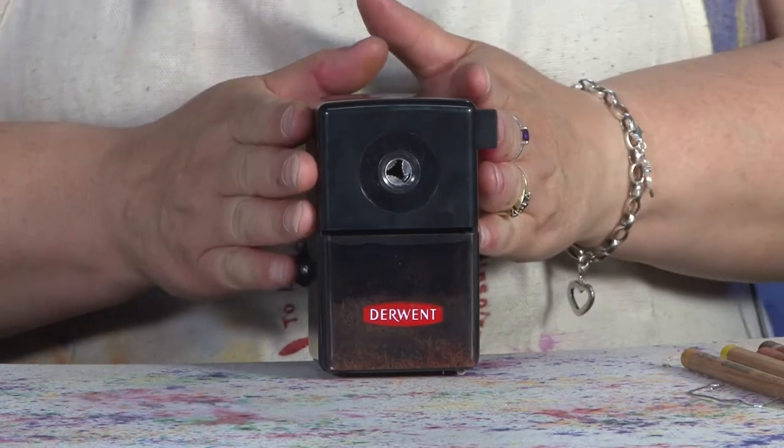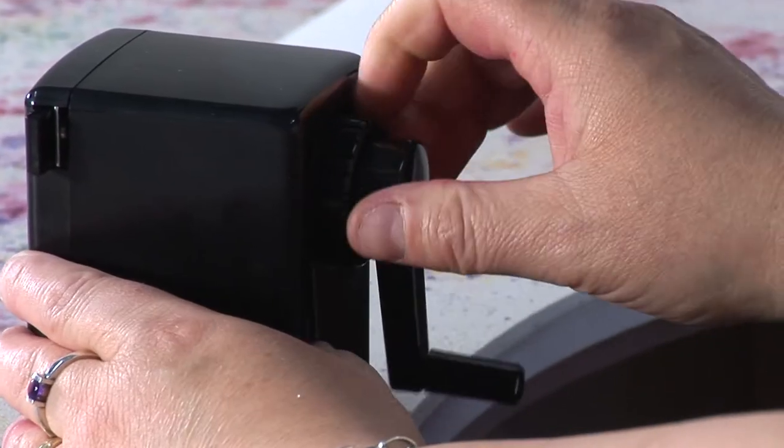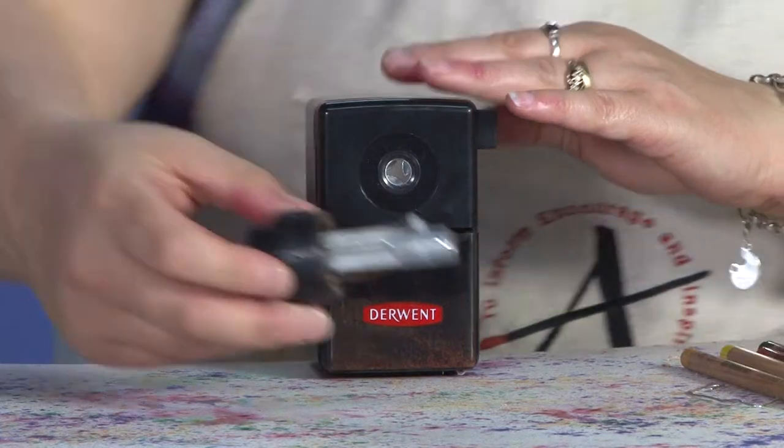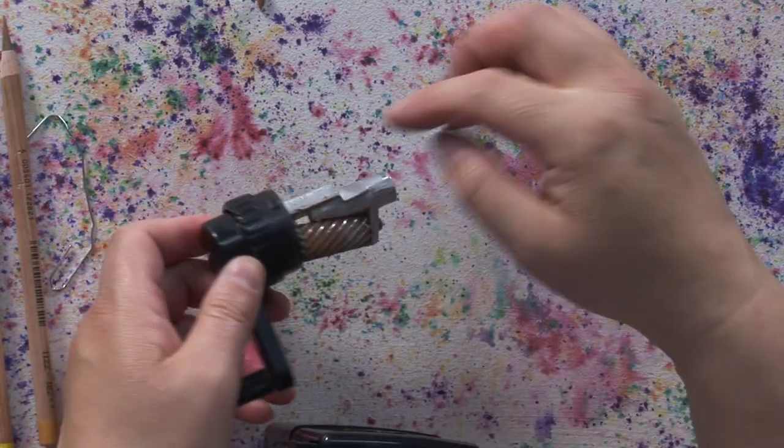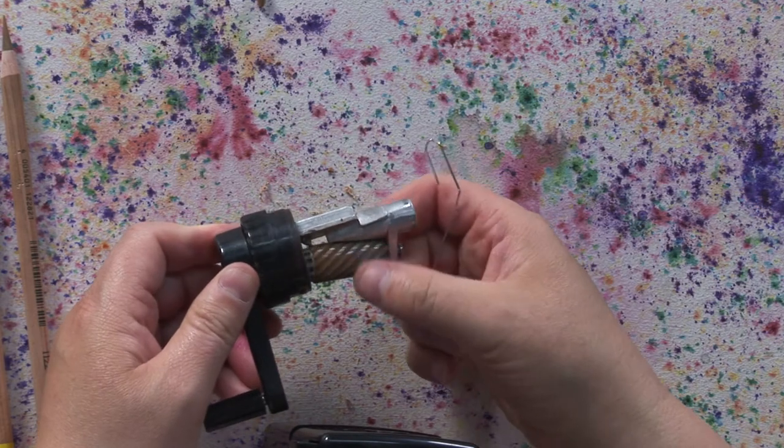Sometimes you'll come to your unit and find that it's not sharpening. Easy enough to fix, so you just take out the barrel here, and you'll often find that there may be some debris in the blade.